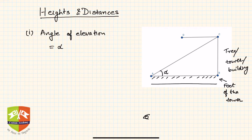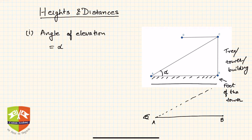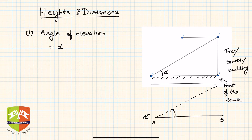You start rotating the line of sight from along AB so that it now points to C. Whatever angle is swept by that line is called the angle of elevation. So now you understand the angle of elevation.